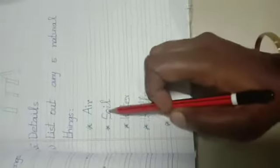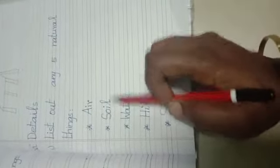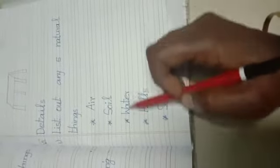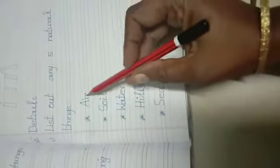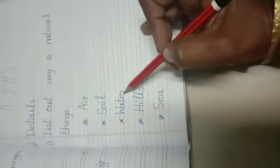First of all, air. A-I-R air. Soil, S-O-I-L soil. Water, W-A-T-E-R water. Hills, H-I-L-L-S hills. And last one, seas. Air, soil, water, hills, another one seas.